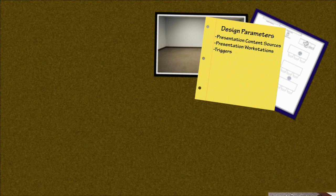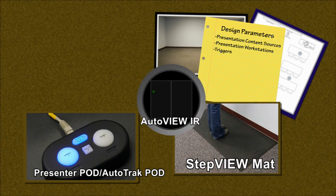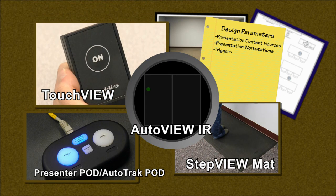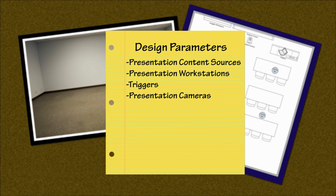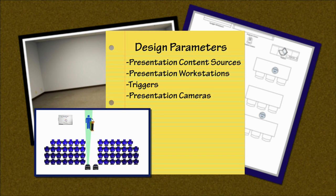Triggers: which triggers will be utilized for switching sources at different workstations? With the help of technology to deliver content, you may want to access other sources like a website on your laptop or a different camera angle of a student wanting to ask a question. Presentation cameras: what types of cameras will be needed and where. Placement of the cameras used in a presentation is very important, especially for a distance learning application or lecture capture. You want to make sure the presenter will be on camera as much as possible.